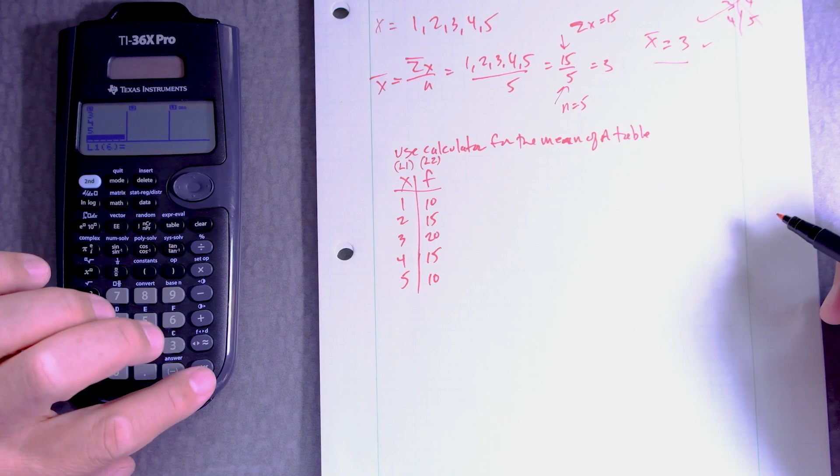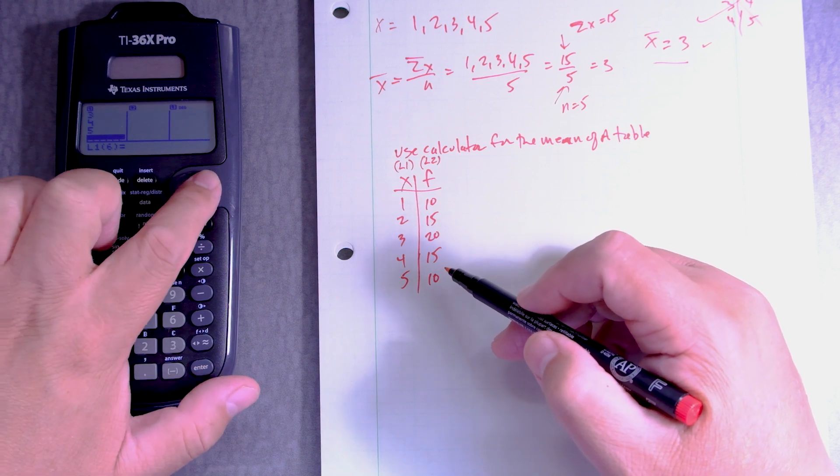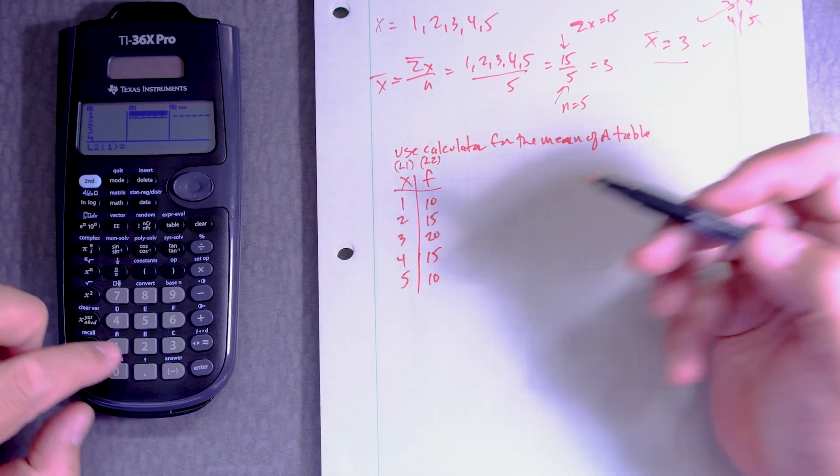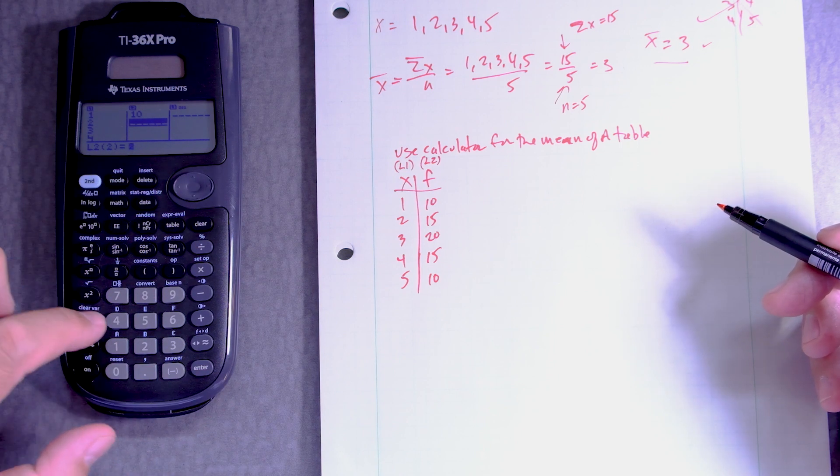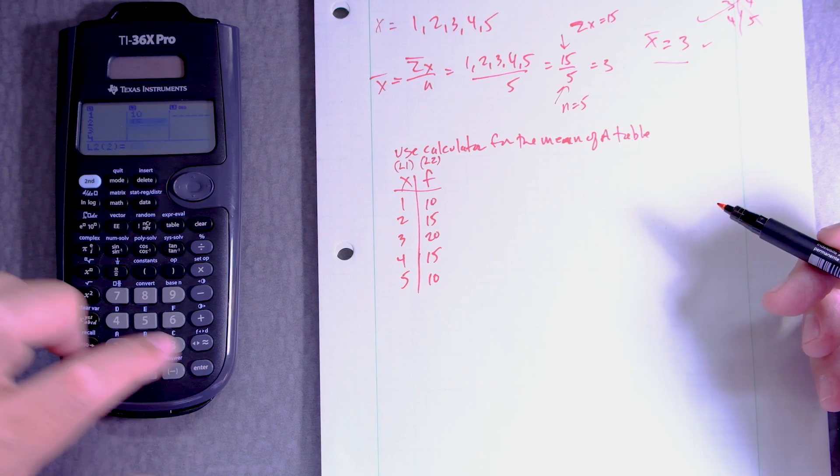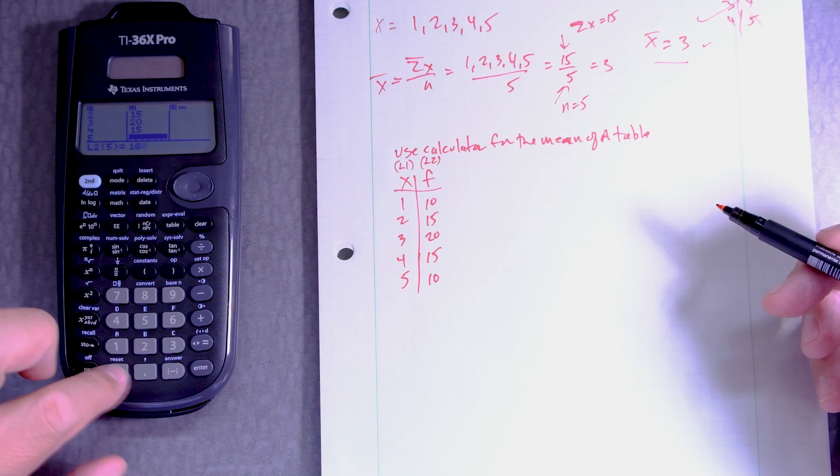And then for the second column I go over and then I press 10, enter, 15. So let's go back here, 15, enter, 20, enter, enter, 10, enter.